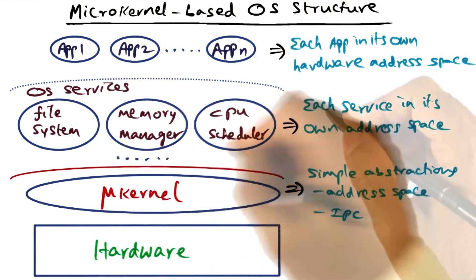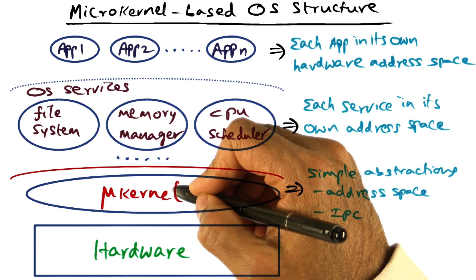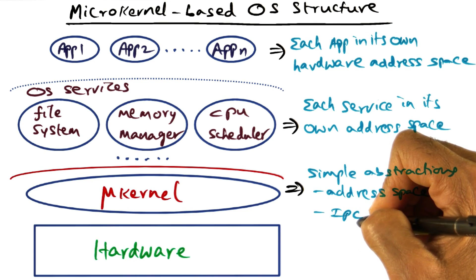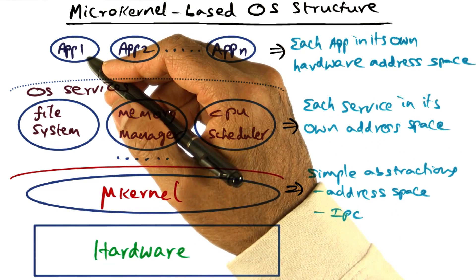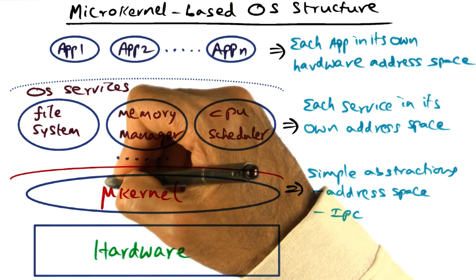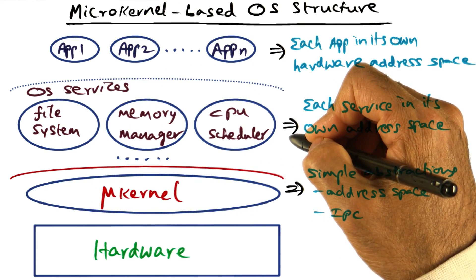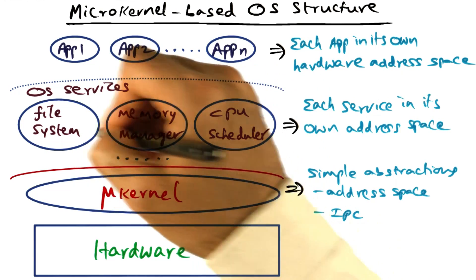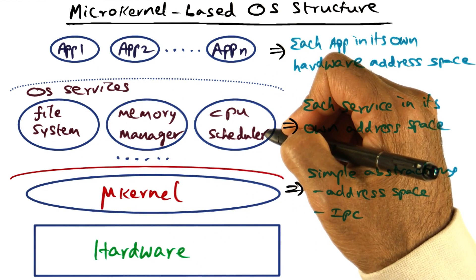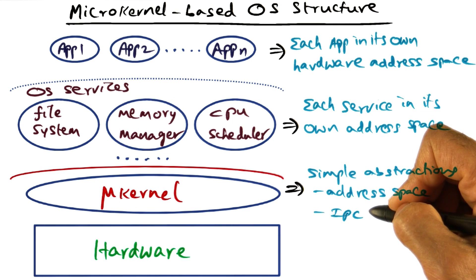The structure entails that the microkernel must provide inter-process communication so that applications can request system services by contacting the servers, and the servers need to talk to one another as well. In order for them to talk to one another, they need inter-process communication as well.